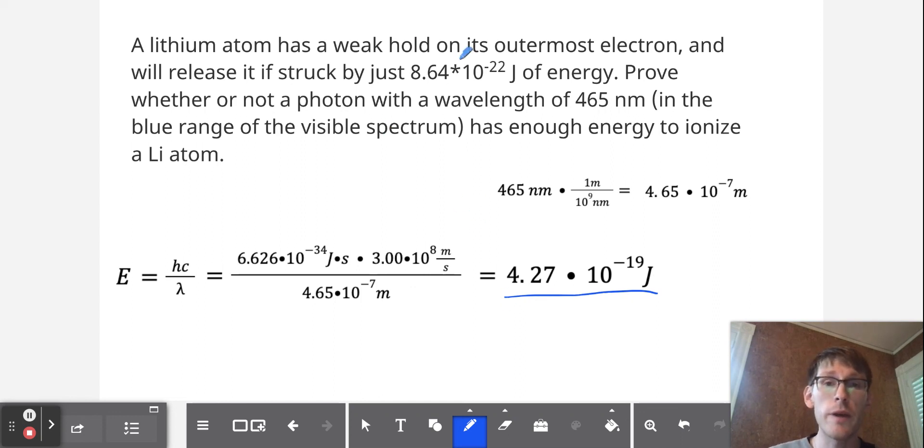Now, if we change this from 465 nanometers to something quite a bit longer, we have something of significantly lower energy. And if we were off by a factor of 1000, if we change it by that much, then perhaps that light, no matter how intense, would not be sufficiently energetic to ionize the lithium atom.